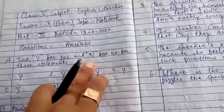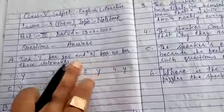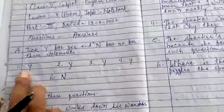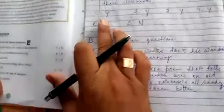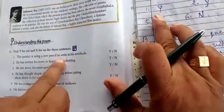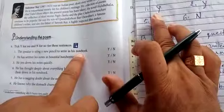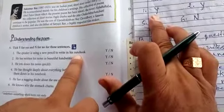For that sentence you have to write N. And as here it is, the speaker is using a new pencil to write in his notebook. This is a correct question, correct statement.